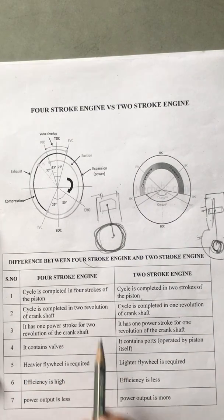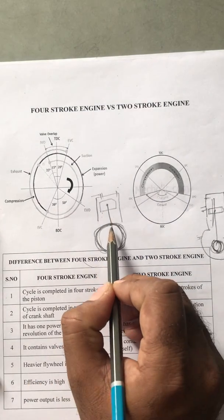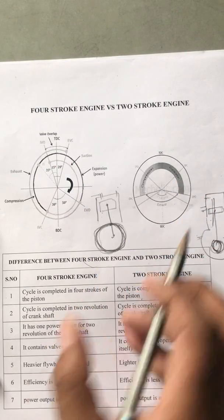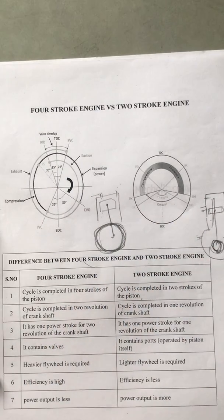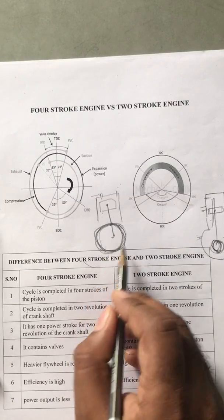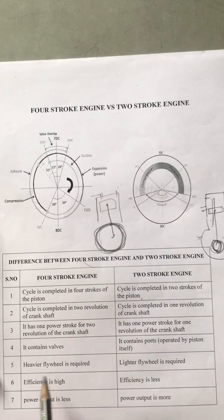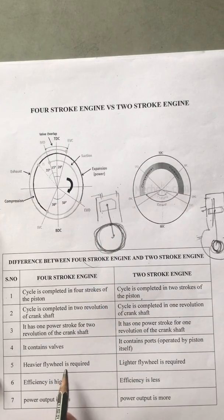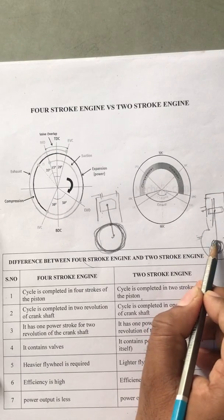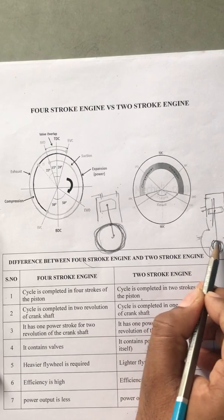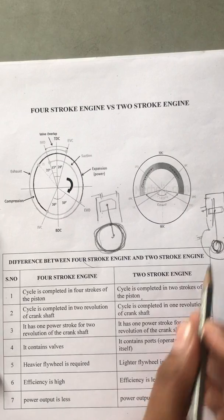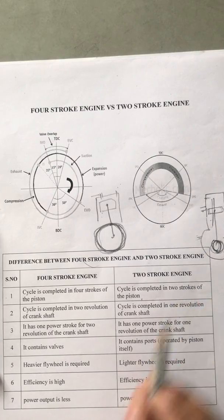In the 4-stroke engine, a heavier flywheel is required because with one power stroke per two revolutions, torque fluctuations are very high and need to be controlled, so a large flywheel is needed. In the 2-stroke engine, with one power stroke per revolution, torque fluctuation is less, so a lighter flywheel is sufficient.